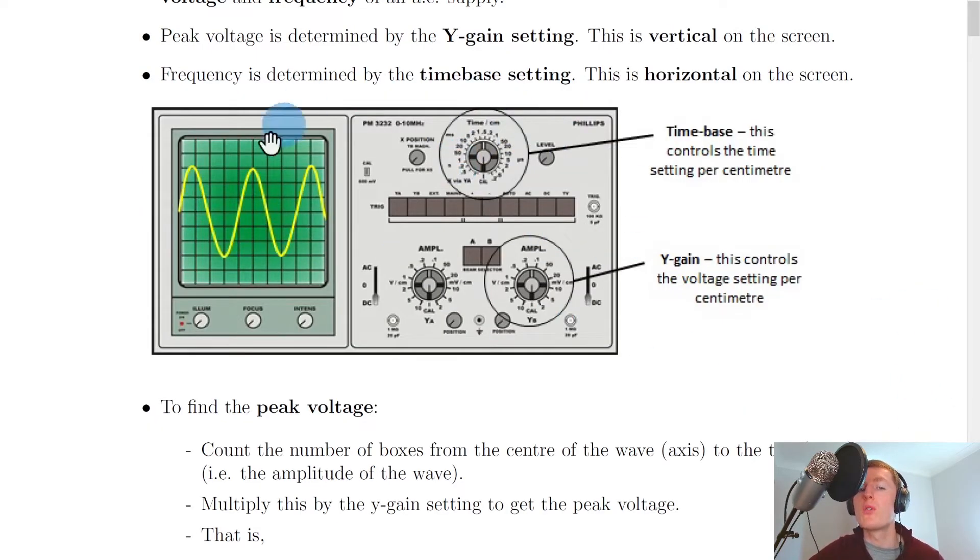This picture shows the time base up at the top here, which controls the time setting per centimeter or per division, because each division on the screen is usually a centimeter. And the Y-gain is down here, which controls the voltage setting per centimeter or per division.